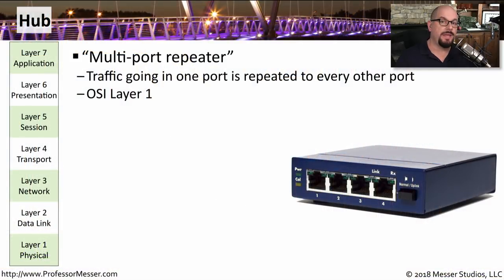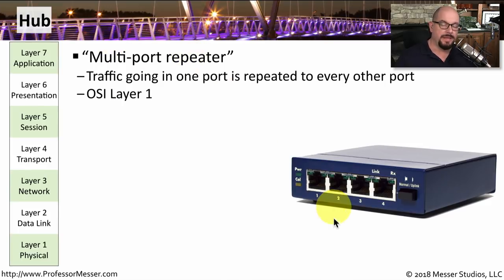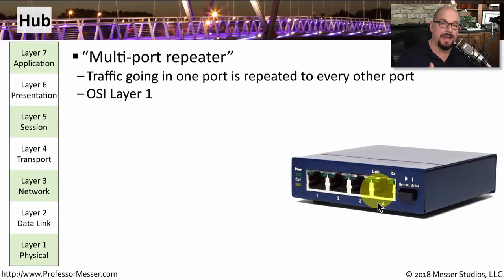If you were an early user of ethernet over twisted pair cabling, then you were probably connecting all of your devices with a hub. You'll often hear a hub referred to as a multi-port repeater. That's because any traffic going into one of the ports of the hub will automatically be regenerated out of every other port. This makes for a very simple forwarding mechanism — if traffic goes into the hub, it comes out of every other interface.